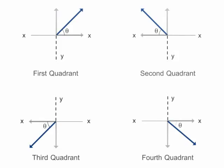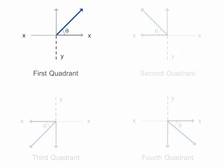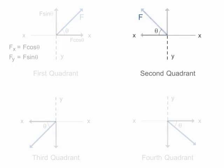In the first example, we have the force F in the first quadrant, so it is resolved as F sin θ along y axis and F cos θ along x axis. Likewise, the force in the second quadrant is resolved as F sin θ and minus F cos θ.